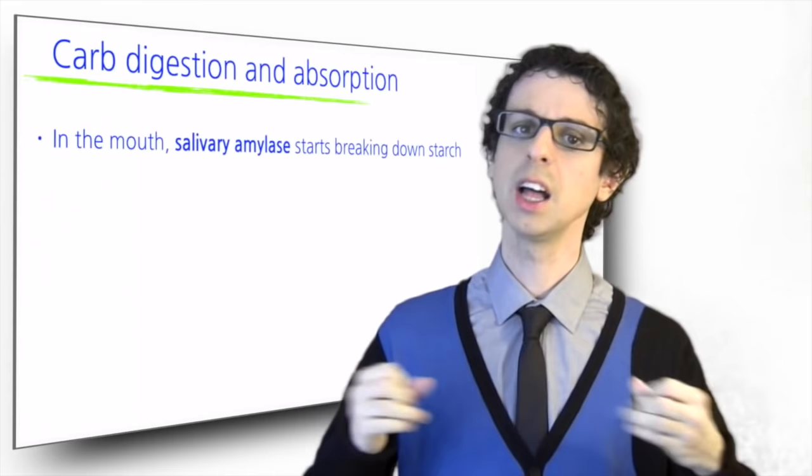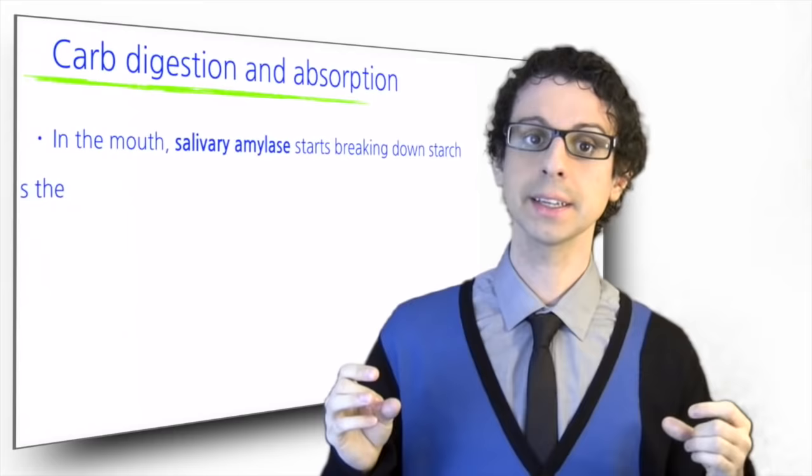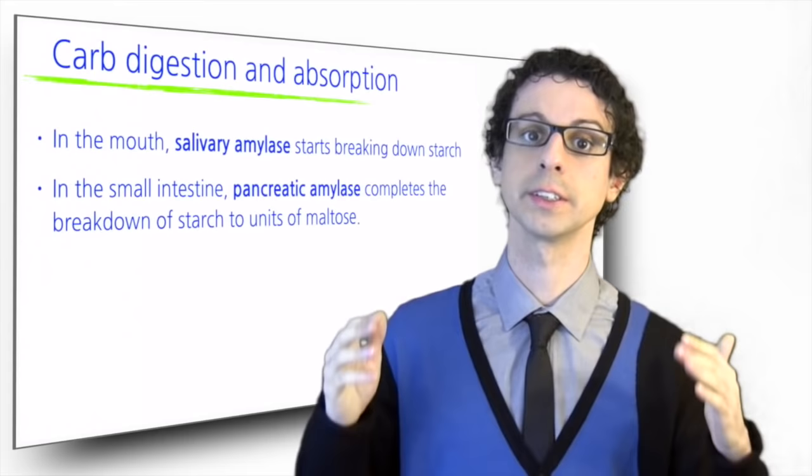Not much happens to carbohydrates in the stomach. In the small intestine, pancreatic amylase from the pancreas completes the breakdown of starch to units of the disaccharide, maltose.